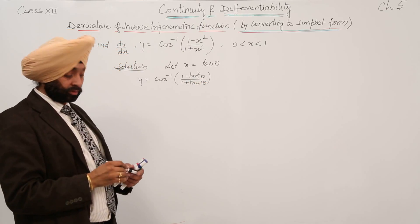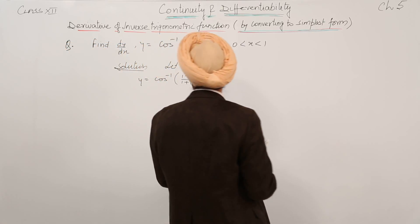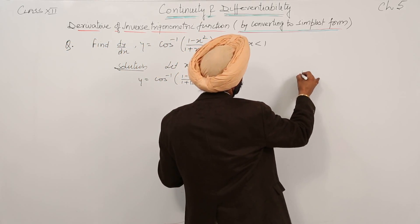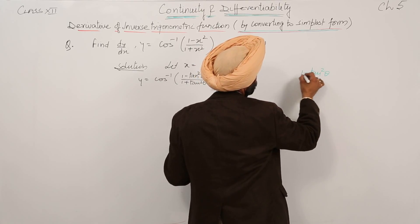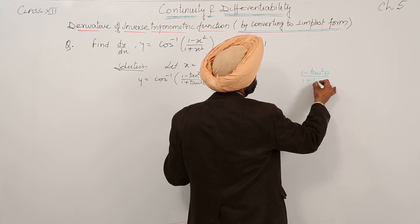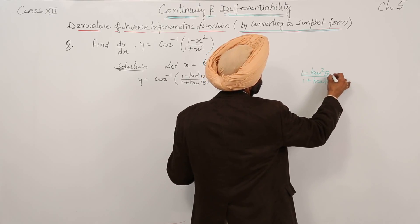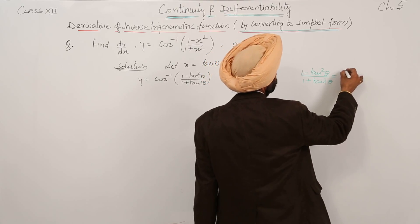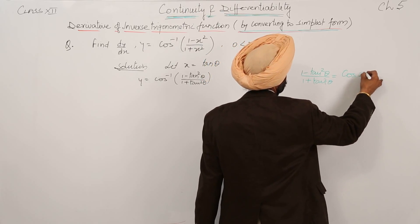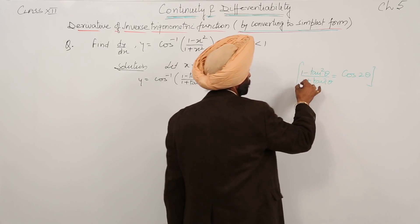Now, what the formula is? We are having (1 minus tan square theta) upon (1 plus tan square theta) is equal to, it was for cos 2 theta, cos 2 theta.